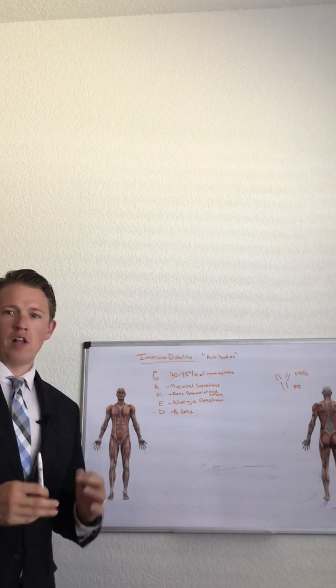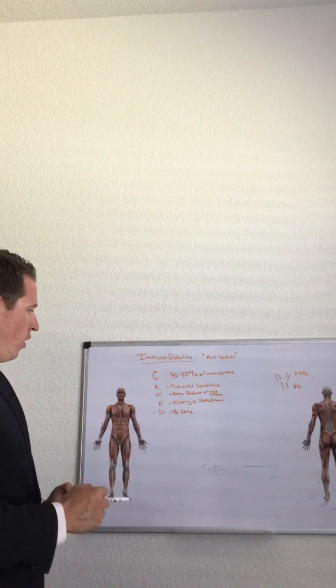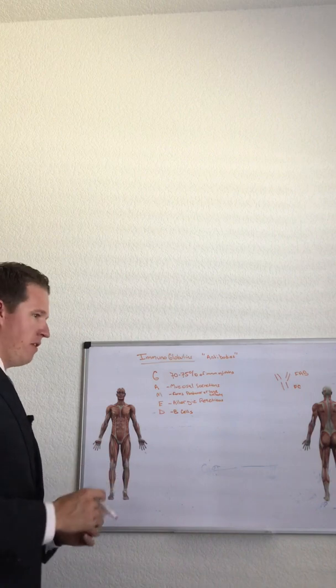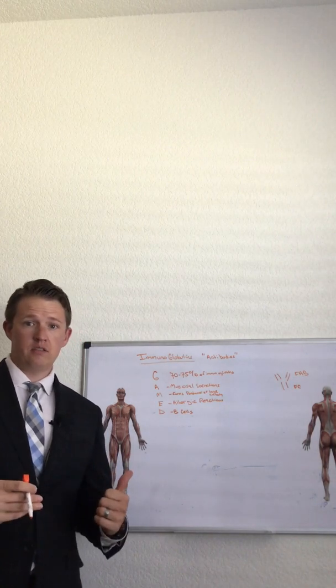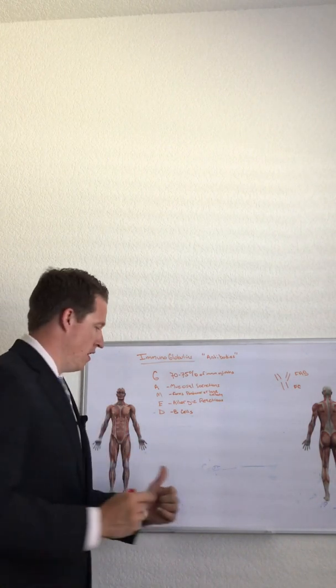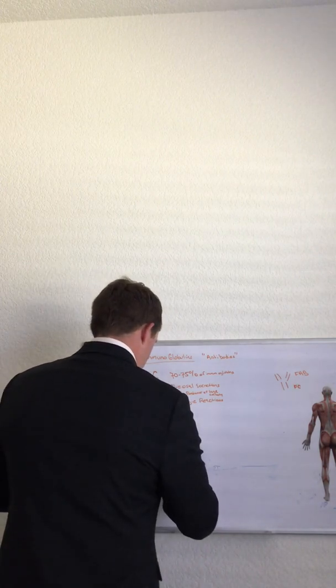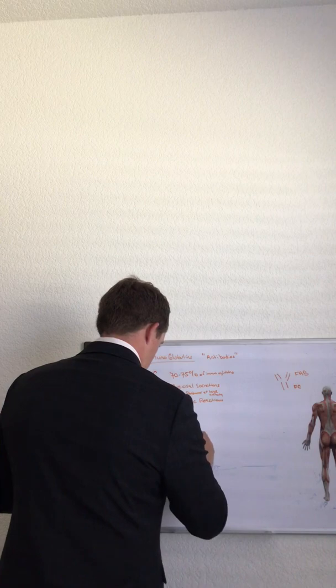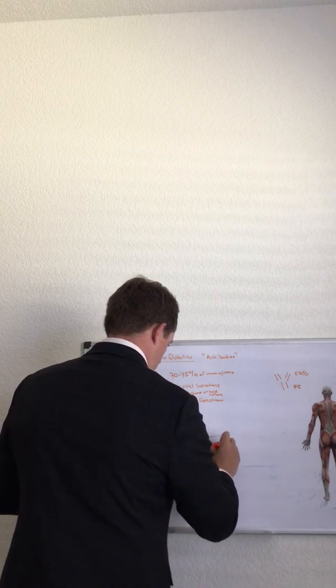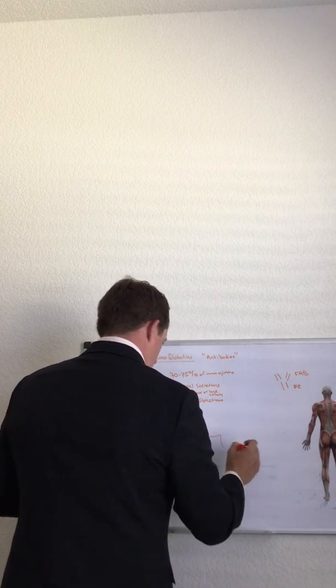So what do immunoglobulins do? Well, in a functioning immune system, they bind to toxins and bad bacteria. So excuse my drawing here, I'm not that good. But basically, we have an immune system here. This is our gut mucosa I'm trying to indicate here. This is healthy.